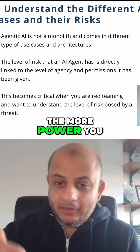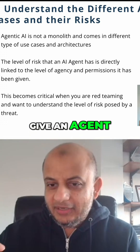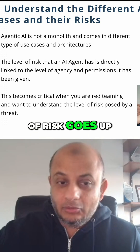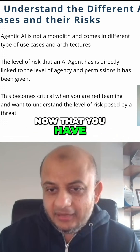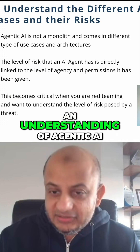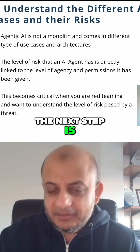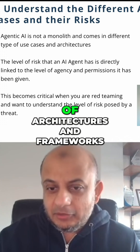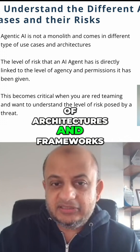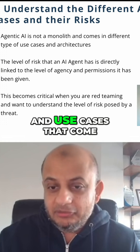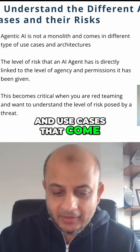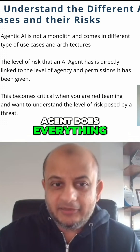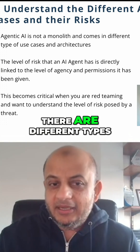Now that you have an understanding of agentic AI, the next step is understanding the different types of architectures, frameworks, and use cases. Agentic is not a monolith — it's not like one agent does everything. There are different types of use cases, and each use case brings its own type of risk.